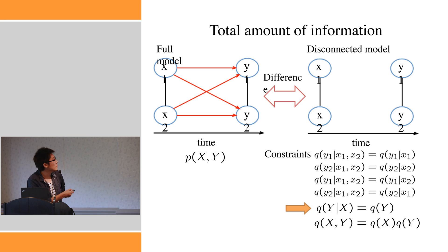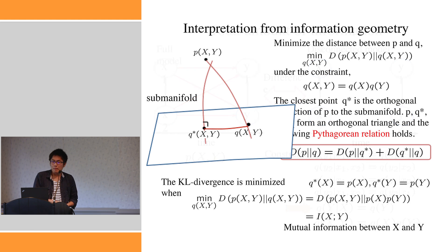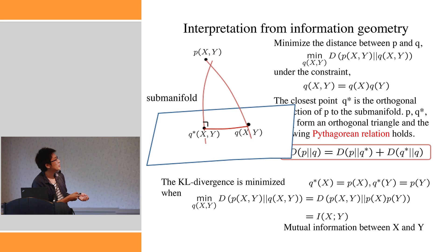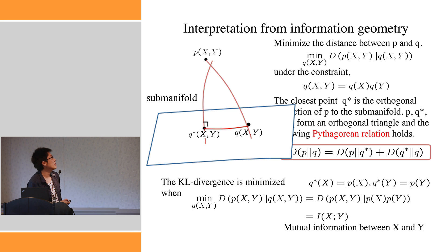First, consider cutting all causal inferences from the past state to the present state. This is done by imposing four constraints: Q(Y | X) equals Q(Y), meaning Y does not depend on X. By imposing this constraint, what we need to do is minimize the difference between the full model and the disconnected model. I introduce a framework of information geometry, which considers the space of probability distributions.